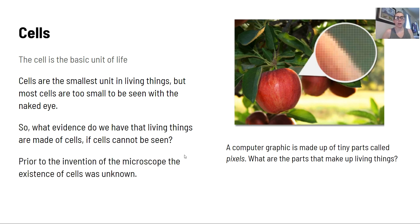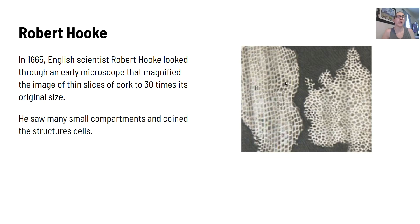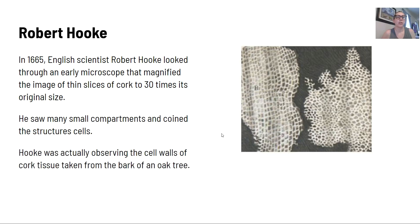Prior to the invention of the microscope, the existence of cells was unknown. Robert Hooke was one of the first scientists to study cells. In 1665, he looked through an early microscope that magnified thin slices of cork to 30 times their original size. We can see an image of what that might have looked like. He saw many small compartments and coined the structure 'cells.' Hooke was actually observing the cell walls of cork tissue taken from the bark of an oak tree.